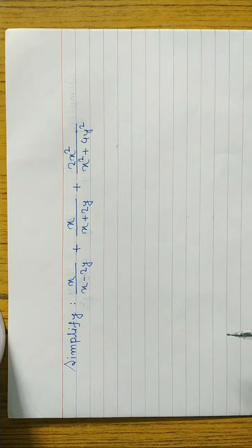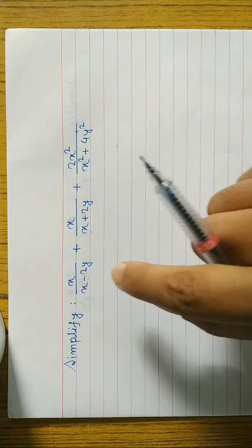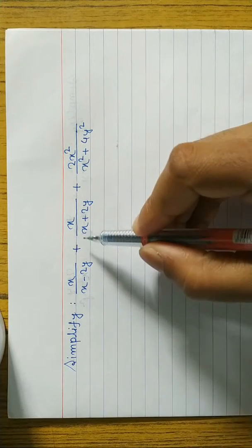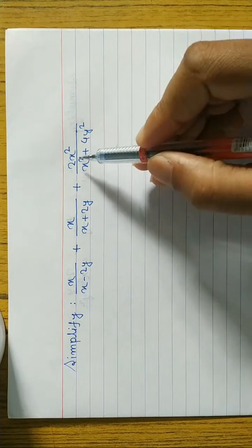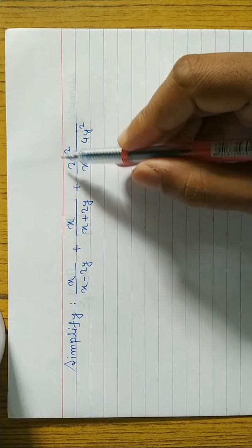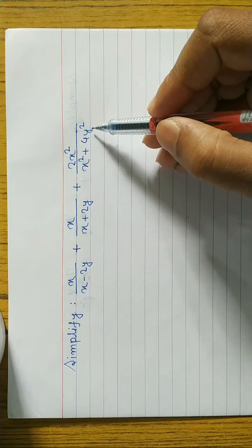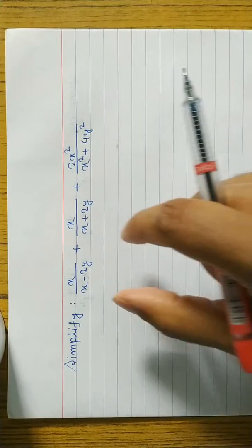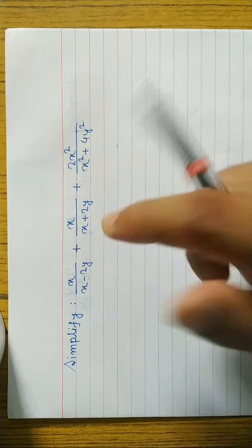This is very important for class 10. We have a three-term expression: x/(x minus 2y) plus x/(x plus 2y), and similarly the last term is 2x square by x square plus 4y square. First of all, we have to take the first two expressions and find the LCM.